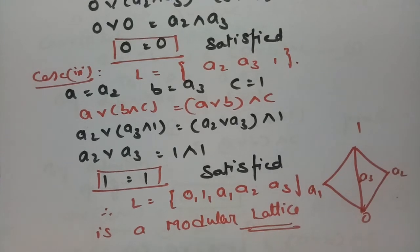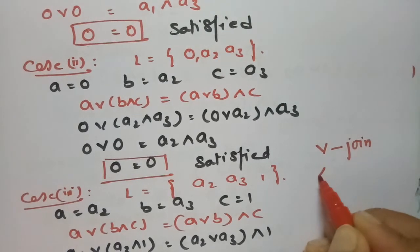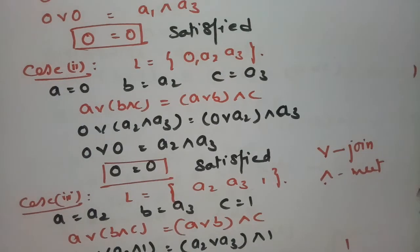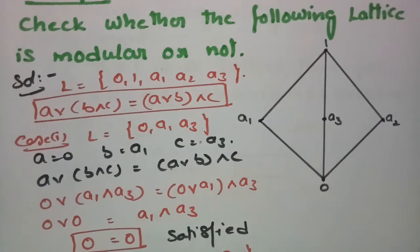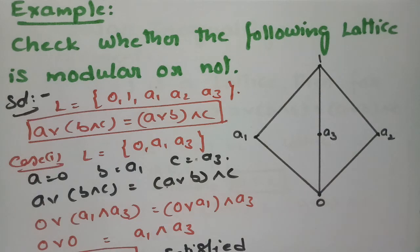This is how we have to solve each and every problem. Meet means lower bound and join means upper bound. We check the figure and equate accordingly. If the modular property holds for any three elements in the given set, we say the given lattice is a modular lattice. Thank you so much for watching. Please share with your friends and subscribe to the channel.